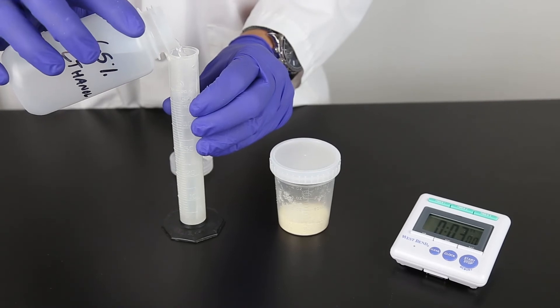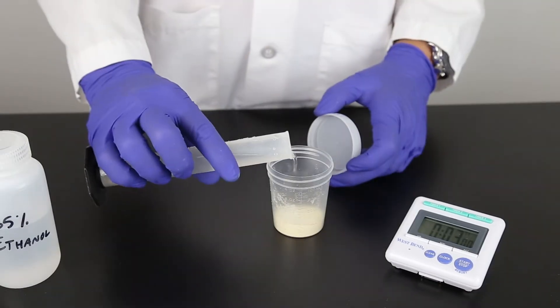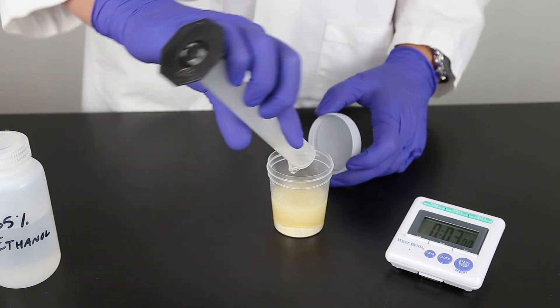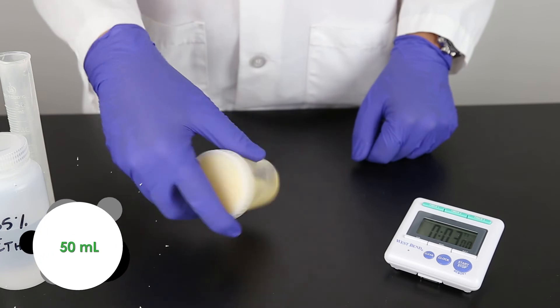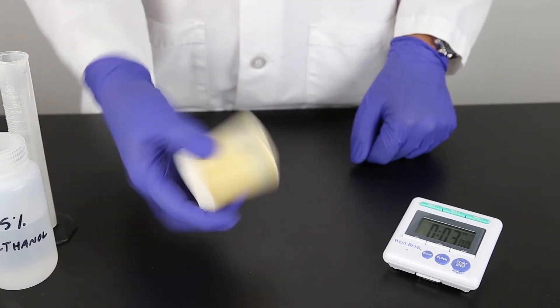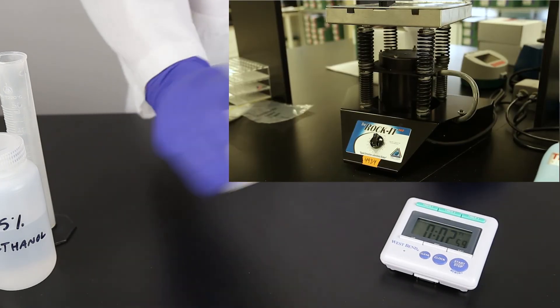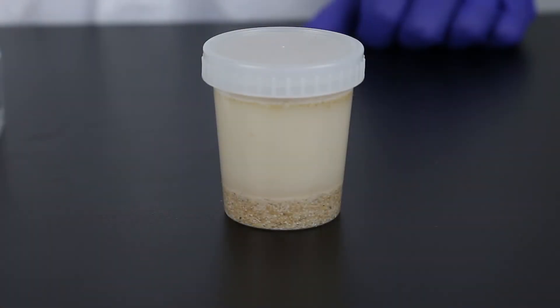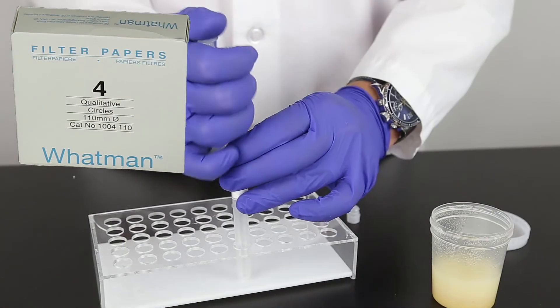The sample is extracted with a ratio of 1 part sample to 5 parts 65% ethanol. For this example, we're using 10 grams of ground sample with 50 milliliters of 65% ethanol. Vigorously shake for 3 minutes using hand or mechanical means. Allow sample to settle and filter with a filter syringe or Wattman number 4 filter paper.